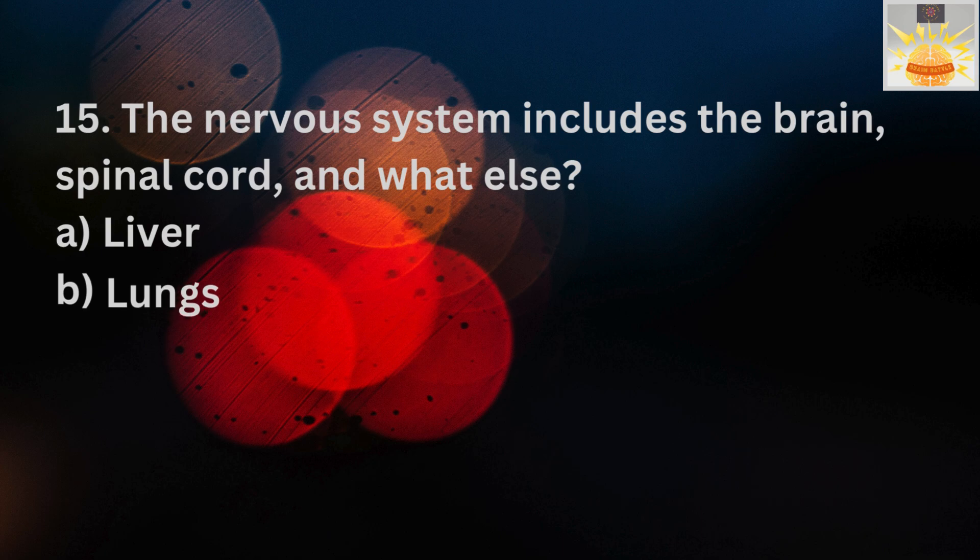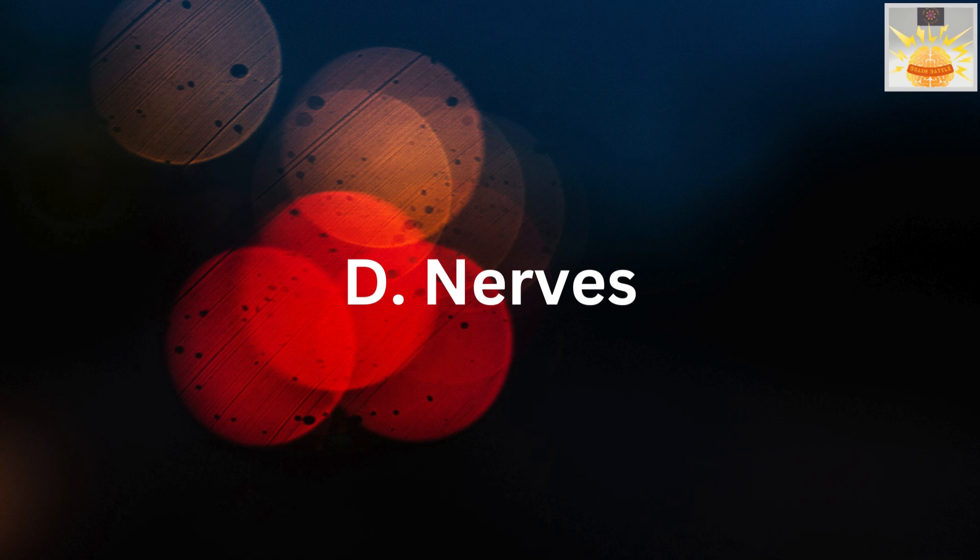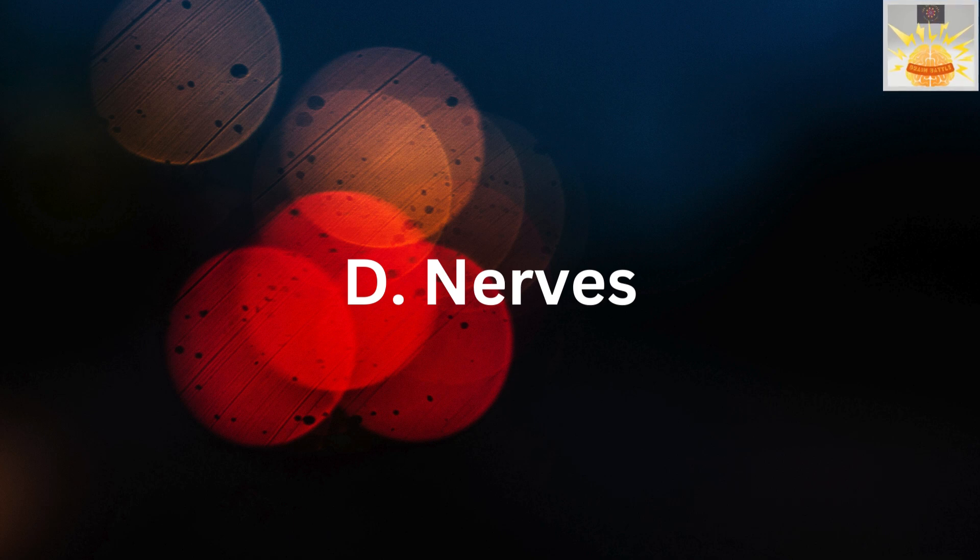Now it's question 15. The nervous system includes the brain, spinal cord, and what else? Answer choices are A. Liver. B. Lungs. C. Heart. And D. Nerves. Yes, the right answer is D. Nerves. Back to you, Rachel, for the next question.